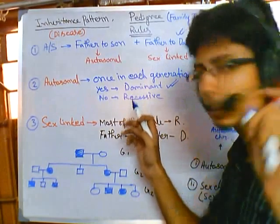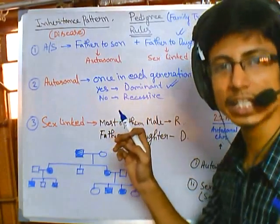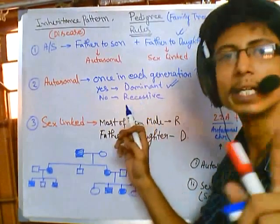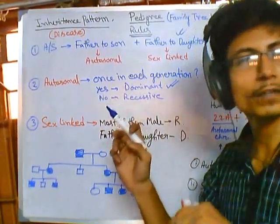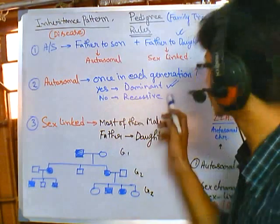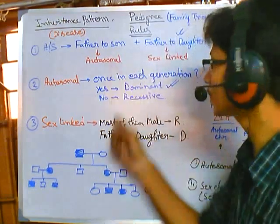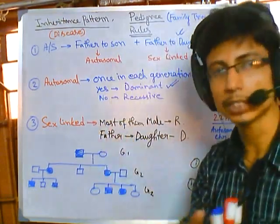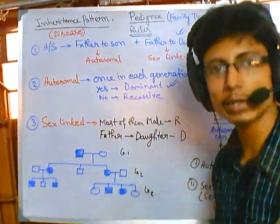If you find that a particular disease is appearing in each generation at least once, you can tell it is of dominant type without investing further time, because these two are the true rules. Other rules require manipulation, so if you use those you need to check your answer.